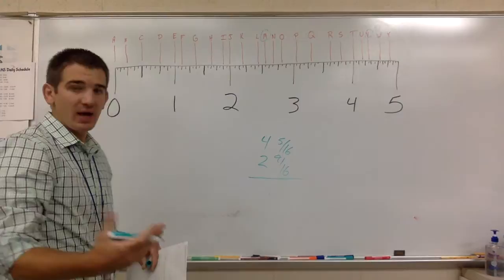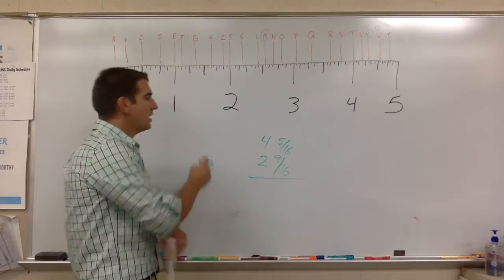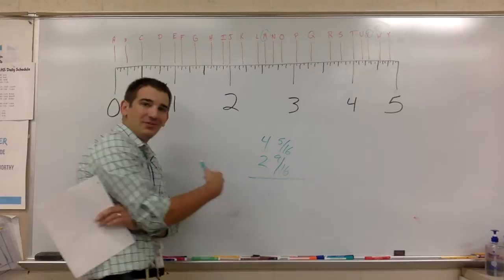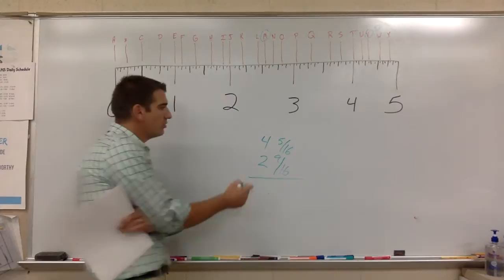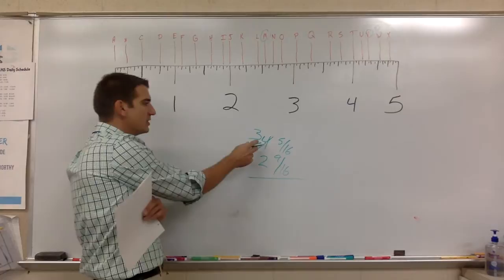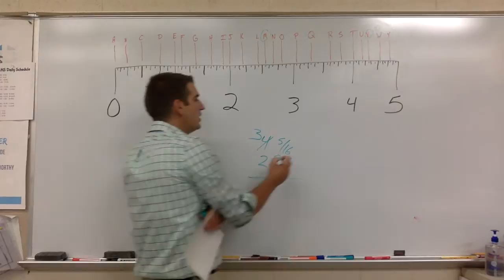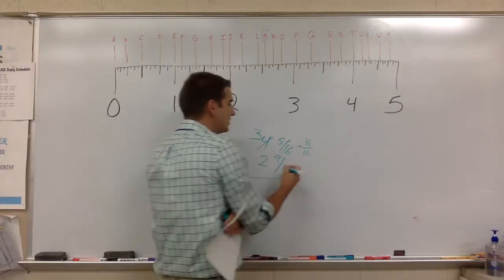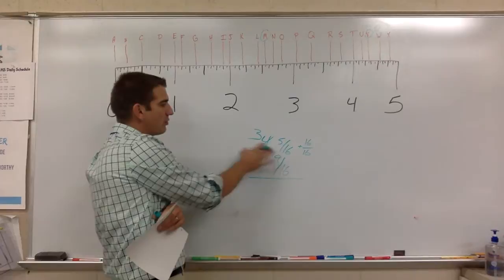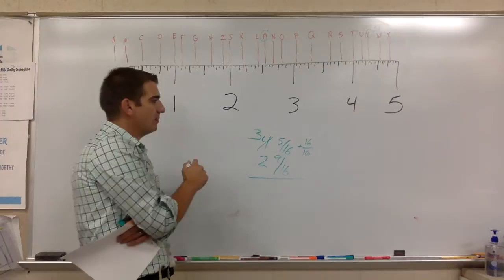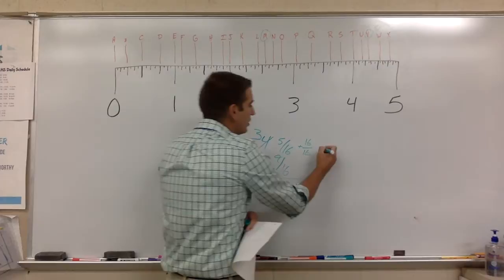So, we can work our way through subtraction. Luckily, both of these are in sixteenths. But, we got an issue. We can't do five minus nine. Five is smaller than nine. Doesn't work. So, what we're going to do is borrow. We're going to take one from this whole number. So, we're going to take four, cross it out, put three. When we do that, we now have a whole extra set of sixteen sixteenths. Because sixteen over sixteen reduced is one. So, three and sixteen over sixteen is the same as four. So, here's what we do. When we add fractions as well, bottom number stays the same. So, we know we're going to get sixteen on the bottom.